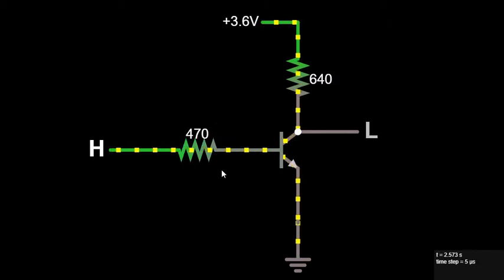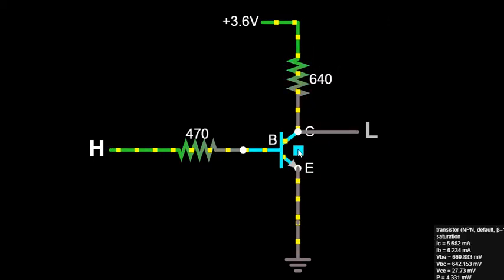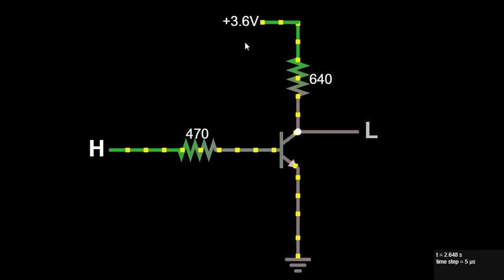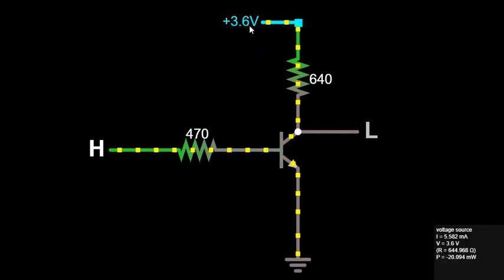This is base resistance to control the base current, and this is collector resistance to control the collector current. 3.6V is positive supply given at the collector and emitter is grounded.